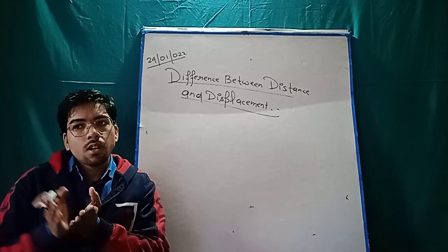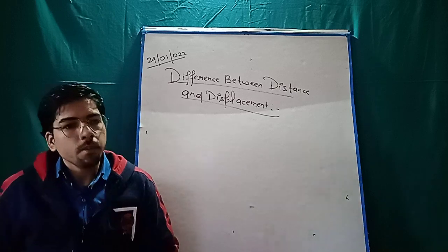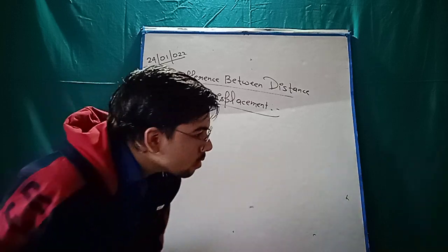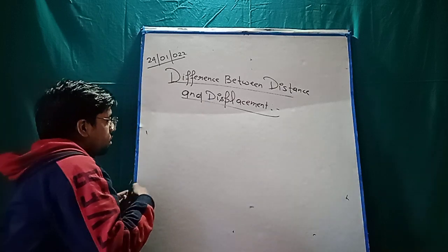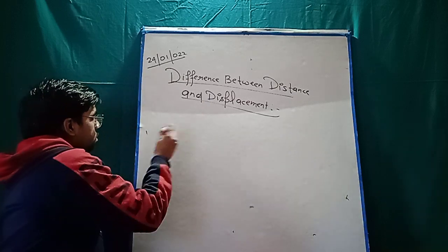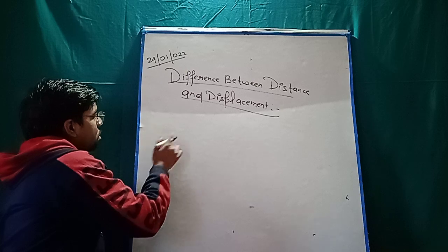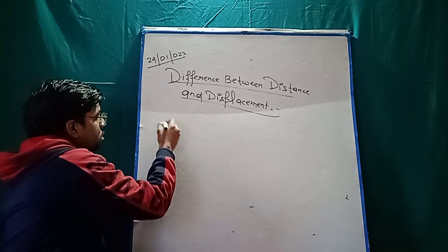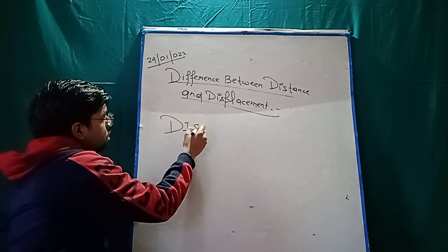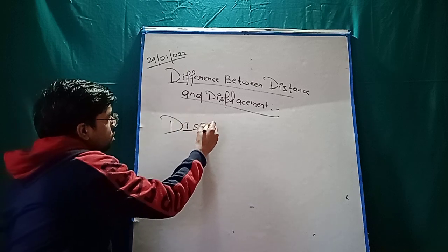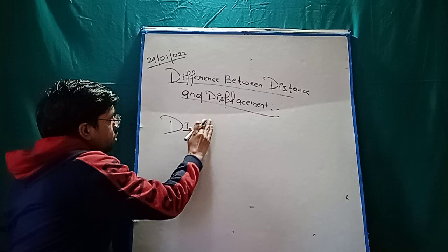So what is distance? Anmol, can you recap? Distance is a scalar quantity. Displacement is a vector quantity. Very good.